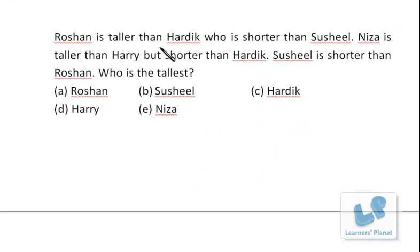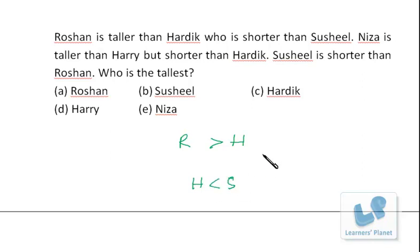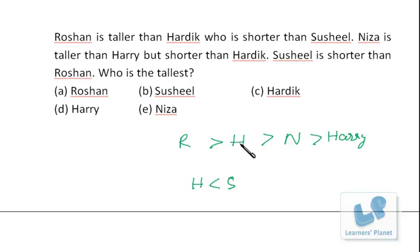Next problem: Roshan is taller than Hardik, who is shorter than Sushil. So Roshan is taller than Hardik and Hardik is shorter than Sushil. Niza is taller than Harry but shorter than Hardik, so Niza goes here in the sequence.